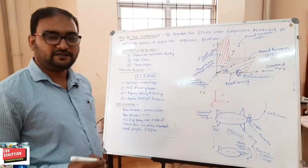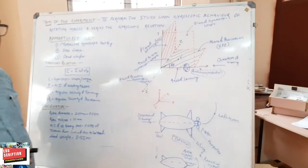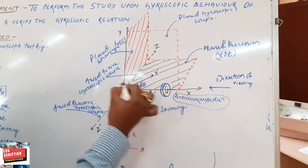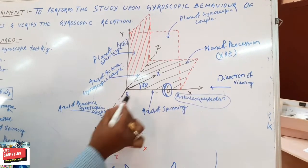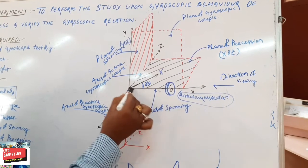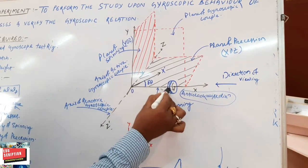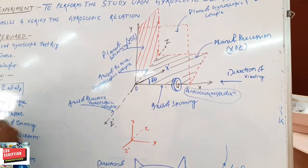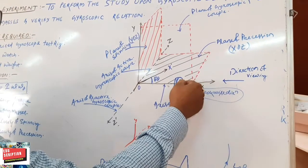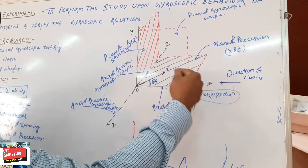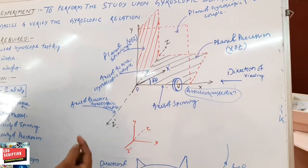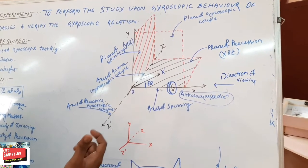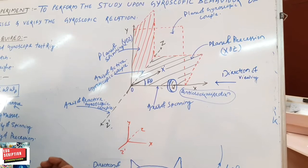To understand the gyroscopic effect upon rotating masses, let us consider a rotating mass upon a Cartesian coordinate system — x-axis, y-axis, and z-axis. The axis of the rotating masses coincides with the x-axis. The rotating masses are rotating in the anticlockwise direction. To find out the direction of the spinning motion as well as the precession motion, we apply the right-hand screw rule.